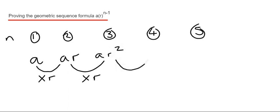And to get the fourth term, again we multiply by R, which would give A R to the power of 3. And then we've just got to multiply it by R again to give us our fifth term, which is A R to the power of 4.